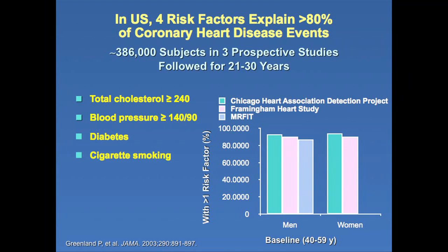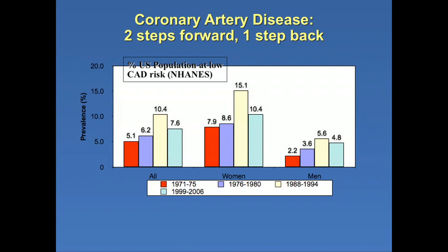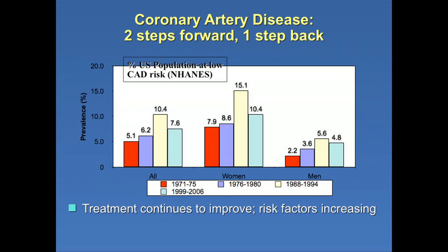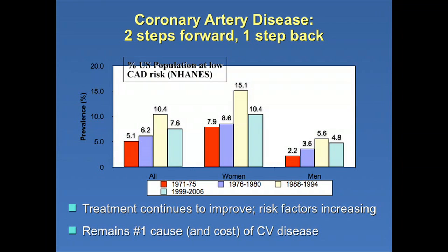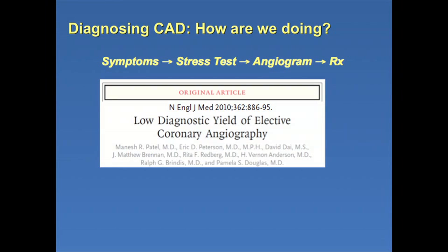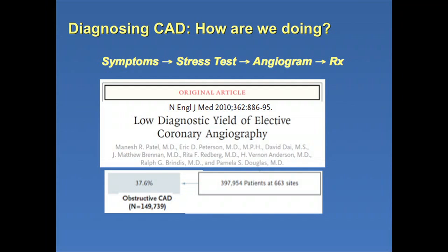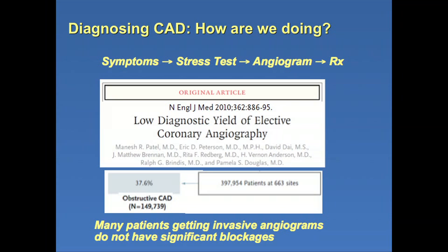Most heart attacks happen in patients with risk factors — it's not something that strikes completely out of the blue. In the United States, less than ten percent of the population is considered at low risk, and that's been getting worse, probably due to obesity and diabetes. Plaque buildup in the arteries remains the number one cause of disease. Unfortunately, a lot of patients still get an invasive angiogram, and in a large series, fewer than half of patients going for non-emergent reasons actually had a true blockage — suggesting we're not doing a good enough job on the non-invasive side to detect coronary disease.